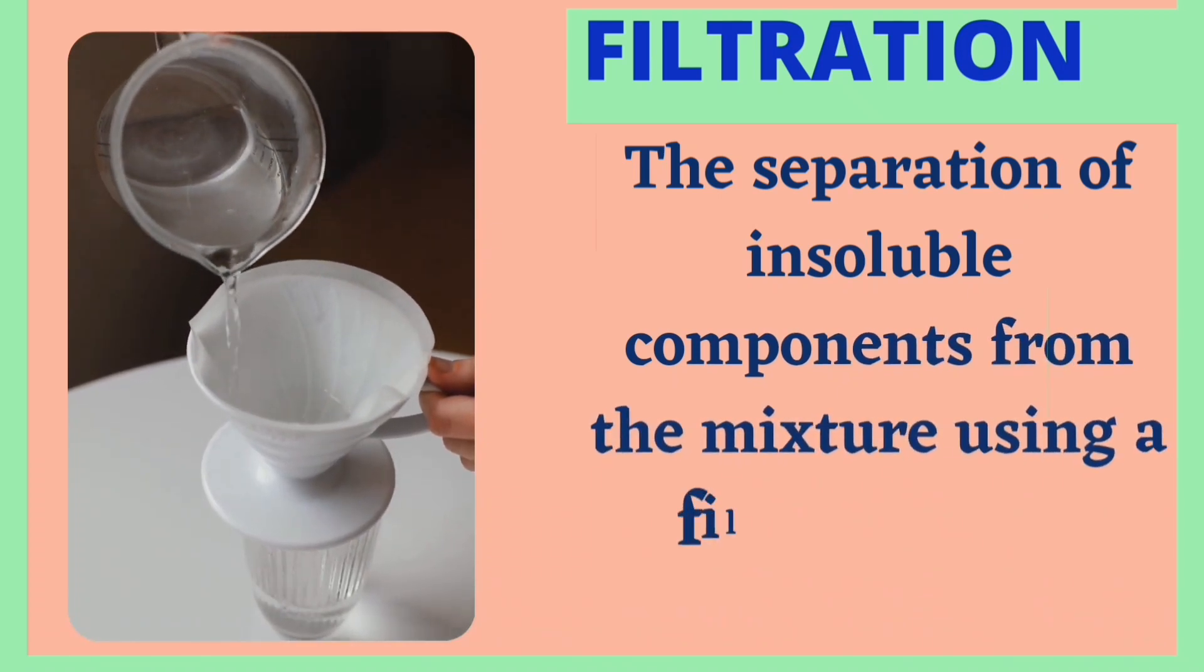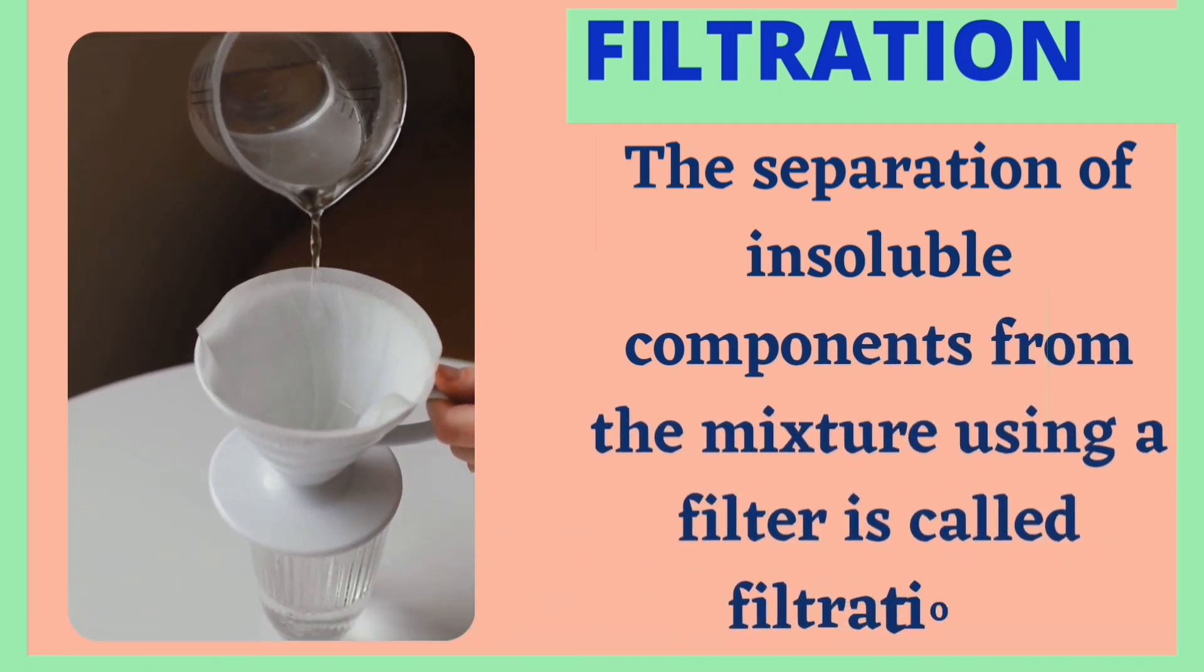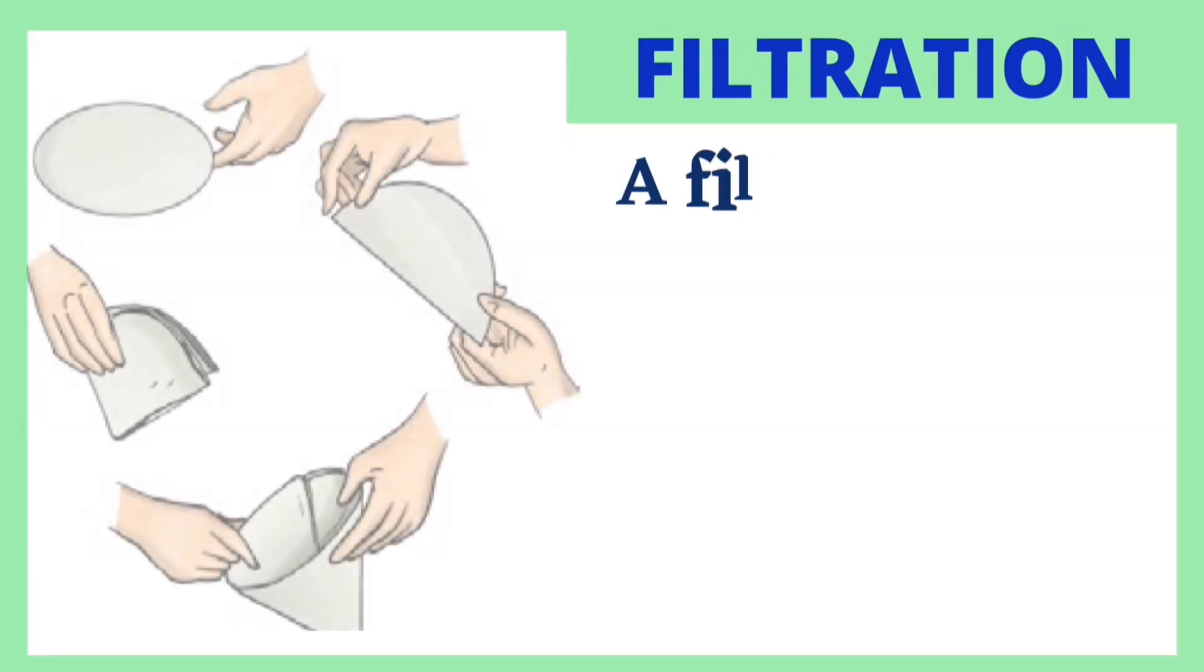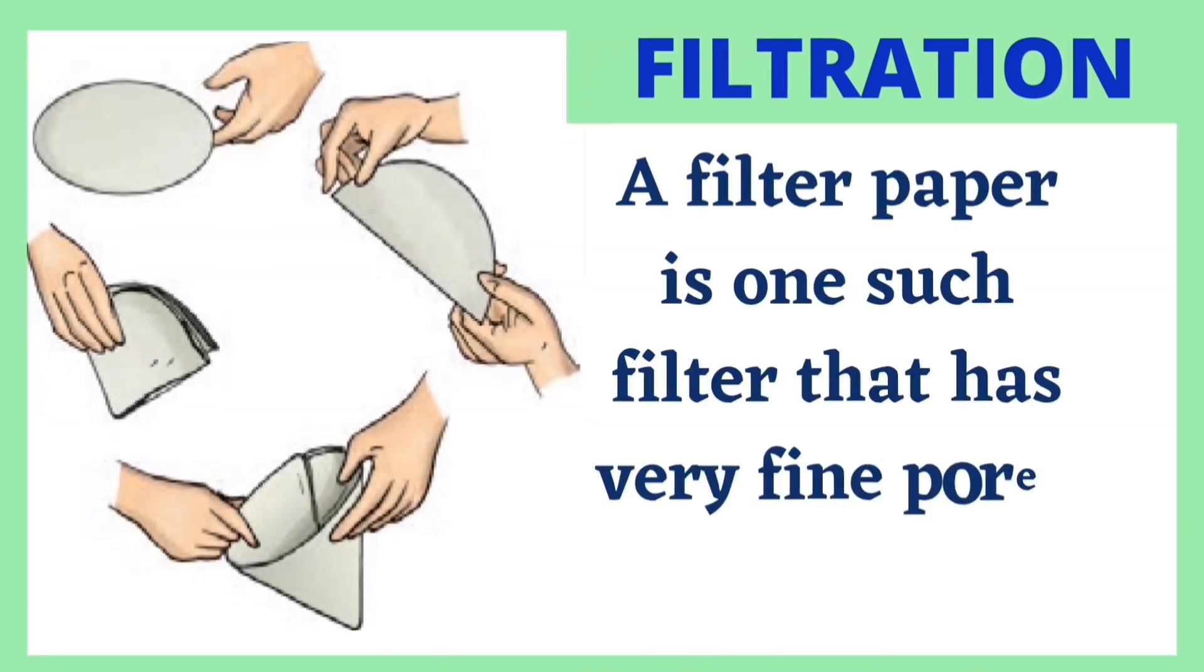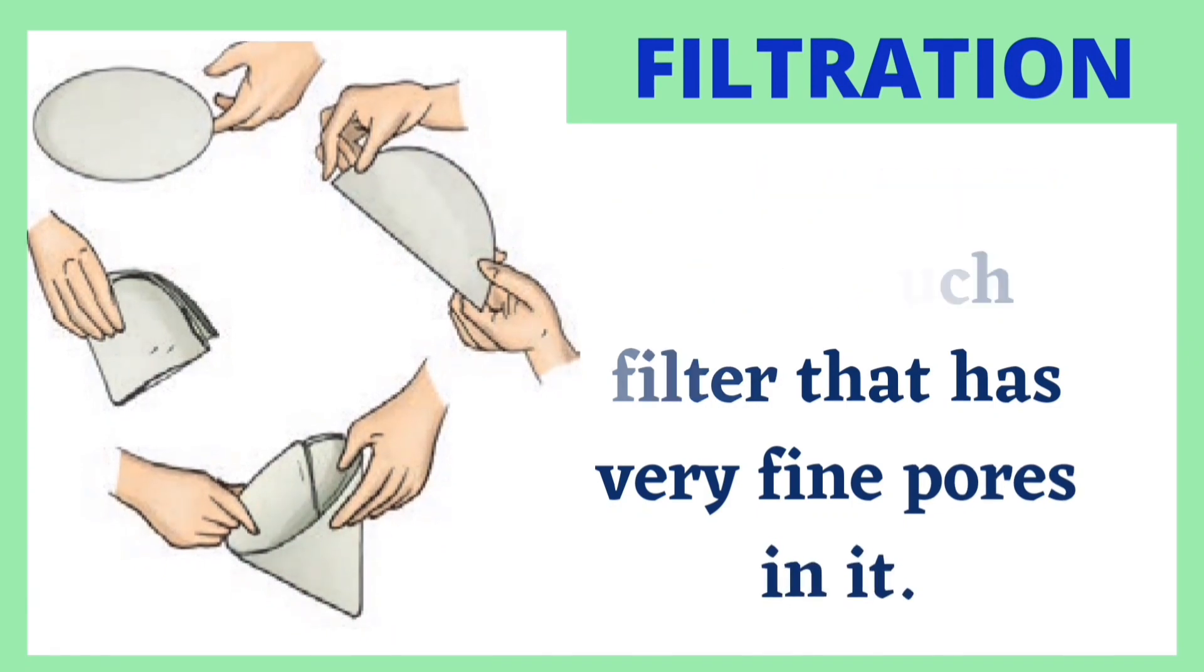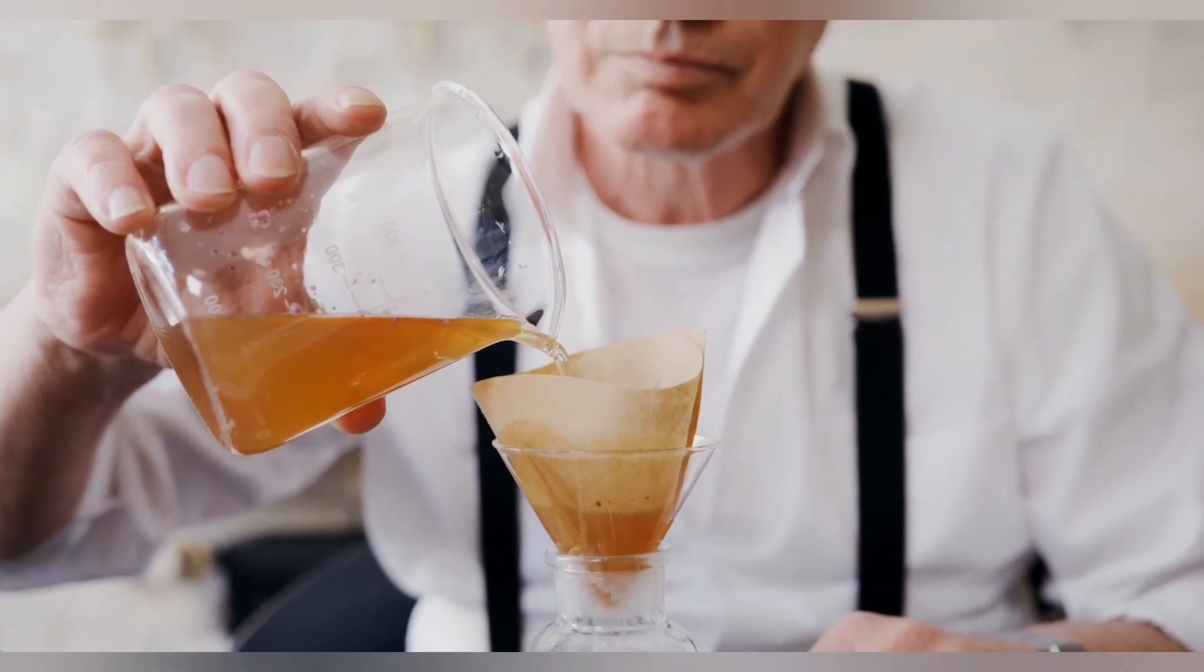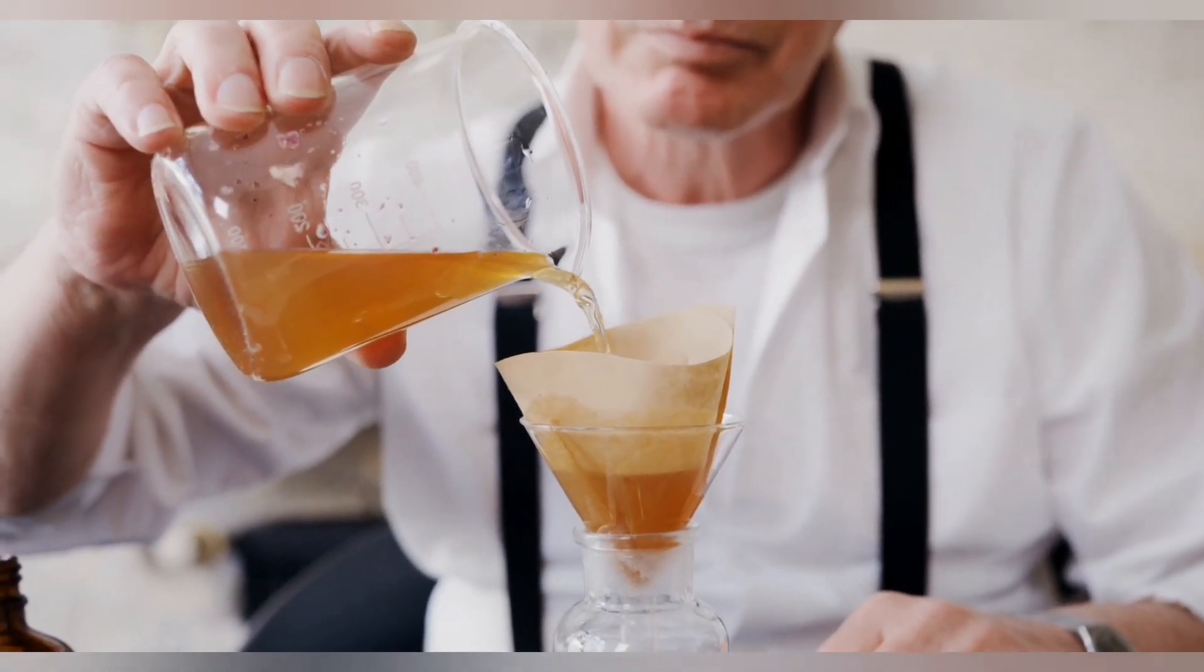In filtration, two substances are separated by passing the mixture through a filtering device. Normally filter paper is used. Filter paper has very fine pores. During filtration, the liquid passes through the filter paper while the insoluble solid remains in it.